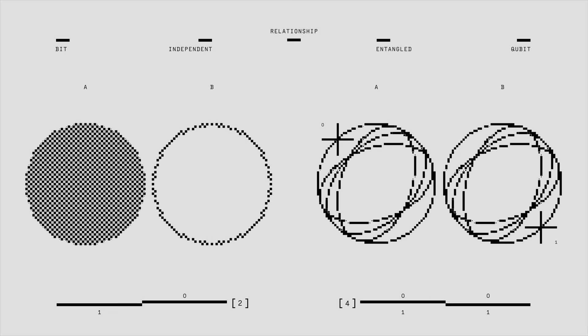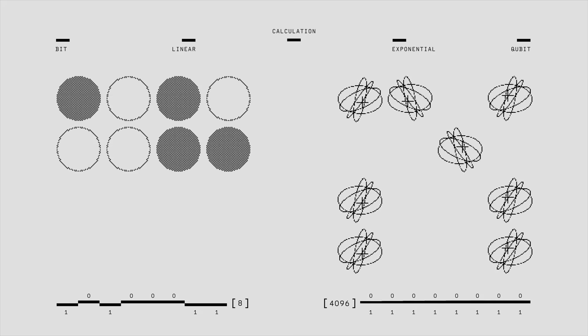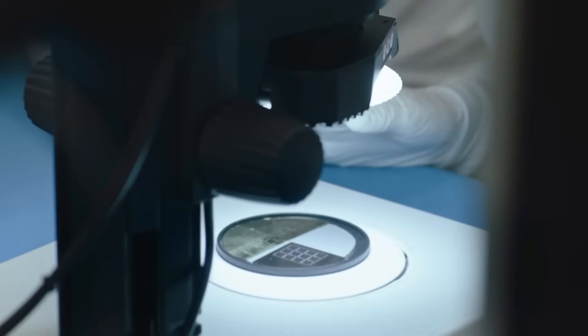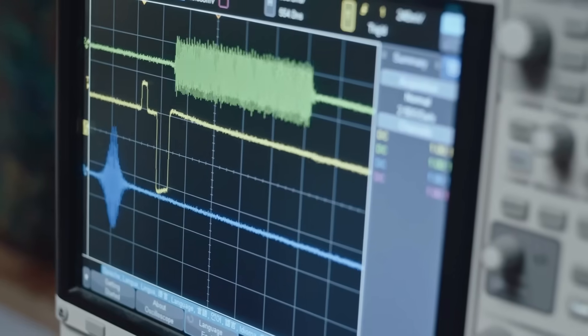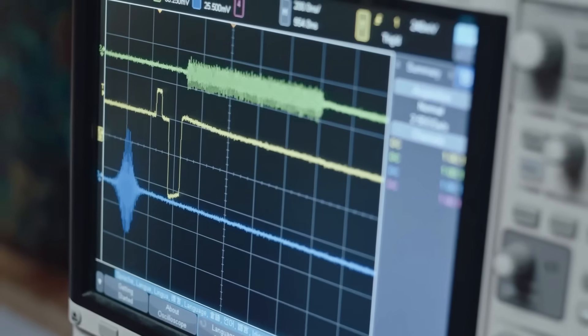Let's unpack this. The experiment was meant to test error correction in entangled systems. The team used 512 qubits arranged in a grid to observe synchronized collapses. In theory, these qubits should behave predictably. But something was off.